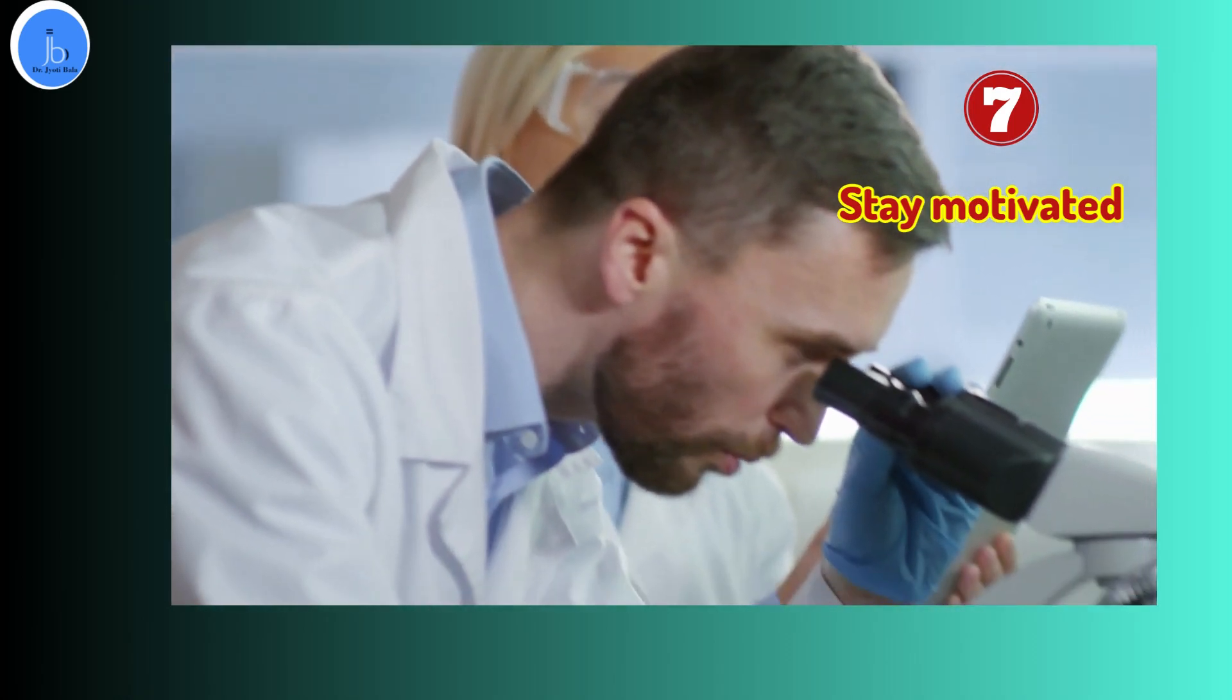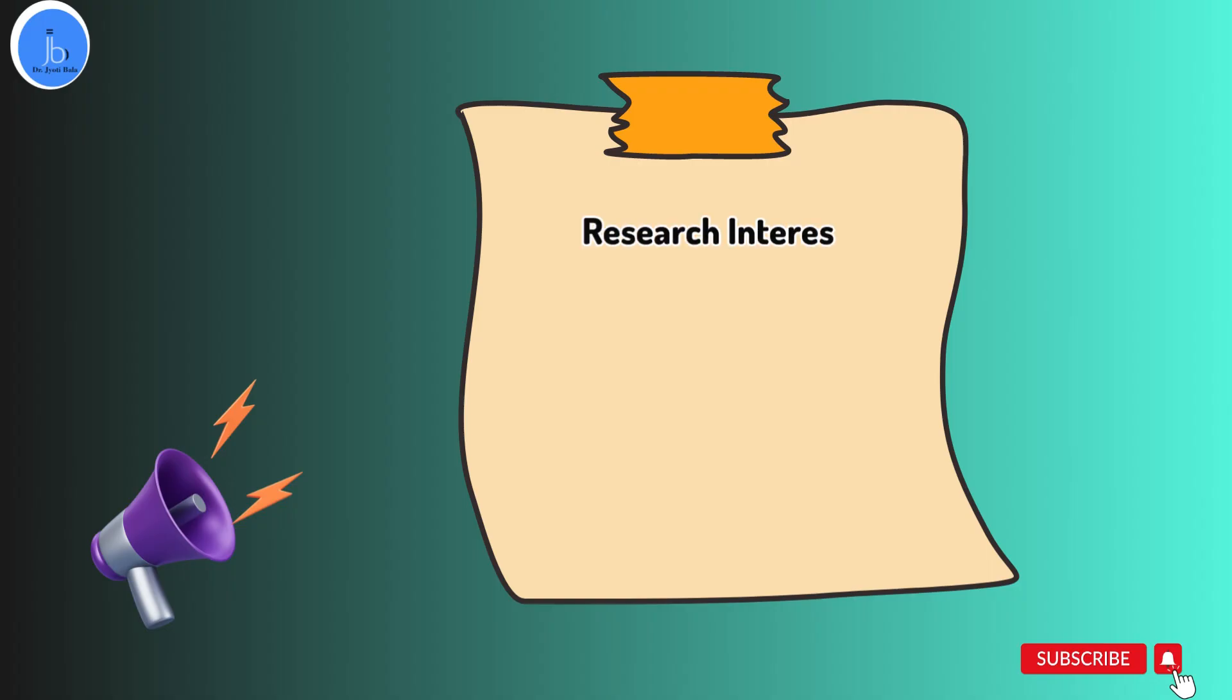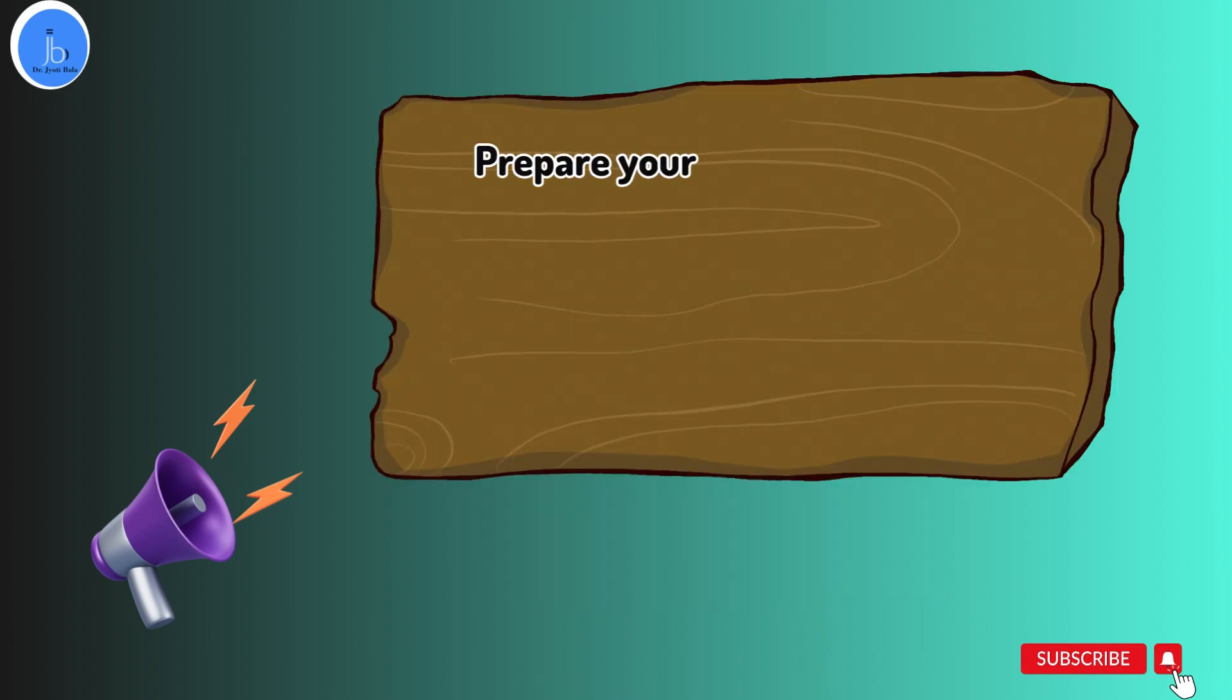So in conclusion, I would suggest you to first choose the research interest. Based on that, do a little bit of homework and do the networking so that you can approach the research labs and relevant supervisor. Make sure to do some homework and background check about those labs, like what are their publications, what are the technology and instrument, what kind of work they are doing, whether they are aligning with your research interests.